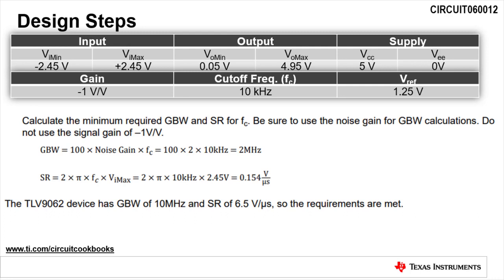As a general rule of thumb, we multiply the minimum bandwidth required by 100 to account for any variations, including process and temperature. This yields a desired op-amp bandwidth of 2 megahertz.